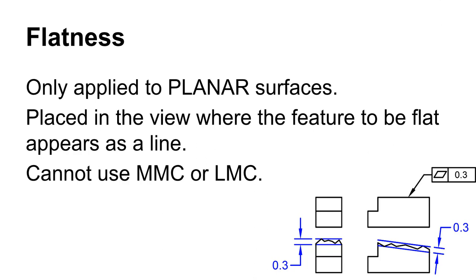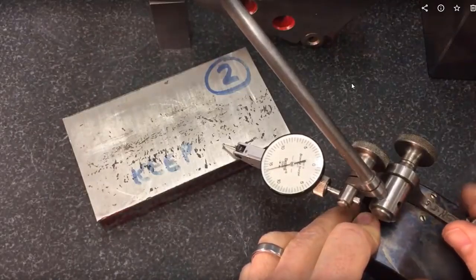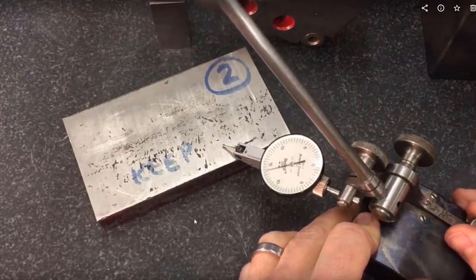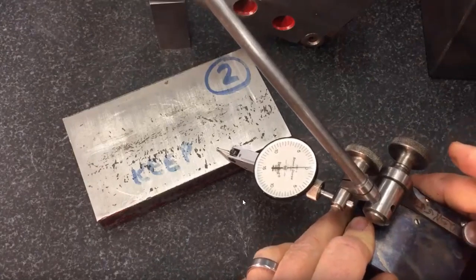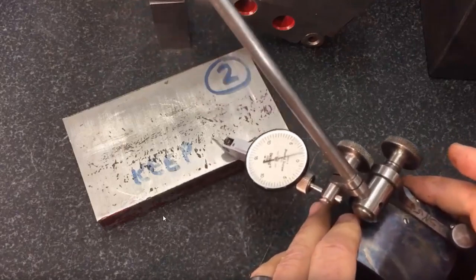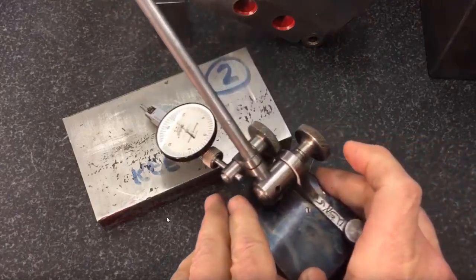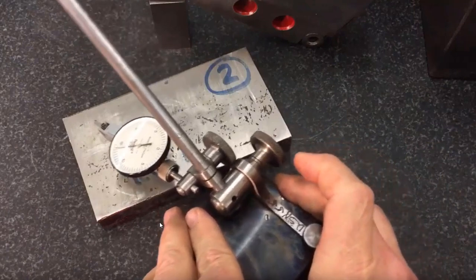Flatness is kind of the next step from straightness and applies only to a planar surface. The flatness tolerance is not the same thing as parallelism. If you have a dial indicator set on a surface plate and slide it along, people get the idea that's measuring flatness — but it's not. What that setup is measuring is parallelism: how parallel this side is to the other side.